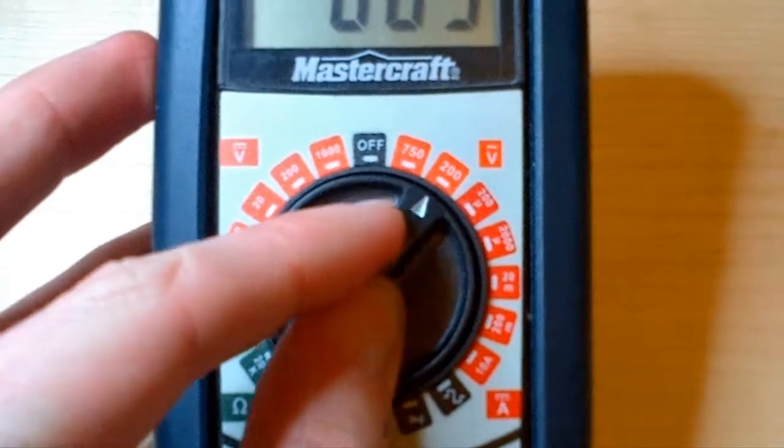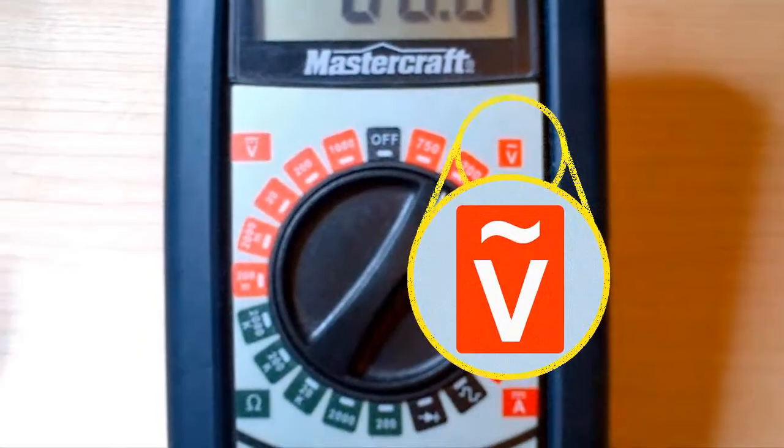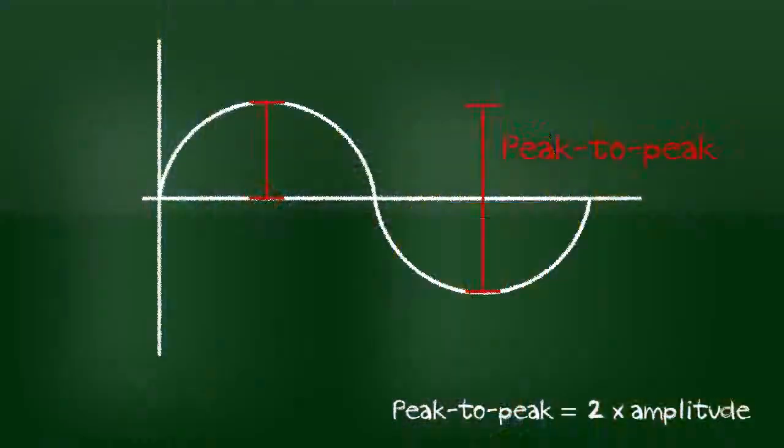An RMS reading is given by a multimeter when in AC mode. When using an oscilloscope, an RMS value can be obtained by either converting the peak-to-peak value or amplitude of the signal using the formulas from before.